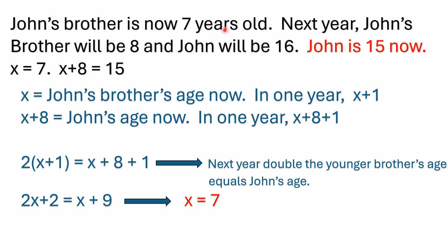So next year, John's brother would be eight — that's seven plus one. And then a year from now, John would have to be 16 to be double his younger brother's age. So that means John today would have to be 15. Does that make sense with what we were told?